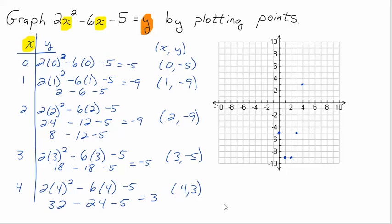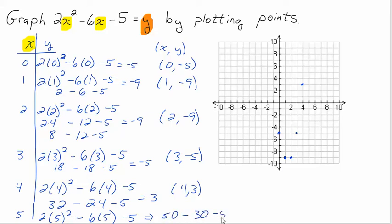Should we try five? I think I can squeeze five in. Two times five squared minus six times five minus five. Five squared is twenty-five, times two is fifty. Six times five is thirty. Fifty take away thirty, take away five — that's twenty, take away five is fifteen. So that gives me the point five, fifteen, which is off my graph but it's up here somewhere.